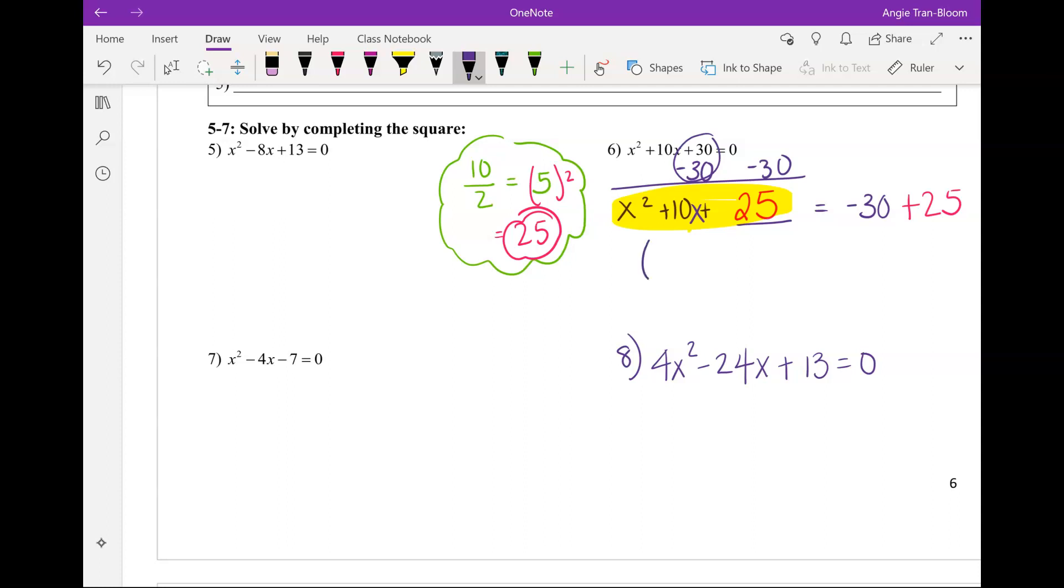We know we will have two identical factors. What are our factors here? What goes in the quantity? 5. And then, what's in the front? X. X and 5. Is it X plus 5 or X minus 5? Plus. How do we determine if it's a plus or minus? You look at the sign right here. If that sign's a plus, this is a plus. Negative 30 plus 25 will give us what? Negative 5. Good.